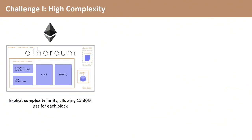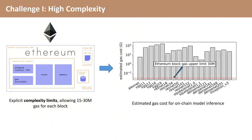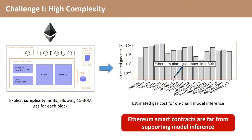Current blockchains have explicit complexity limits for smart contracts due to system throughput and security concerns. Ethereum only allows up to 15 to 30 million gas for each block, but the gas cost of all evaluated models far exceeds the block gas limit. This indicates that Ethereum smart contracts are far from supporting model inference.